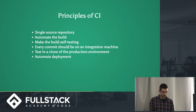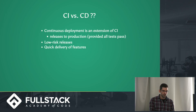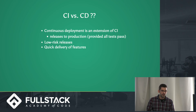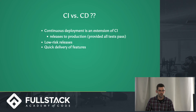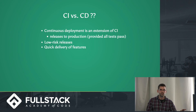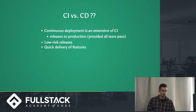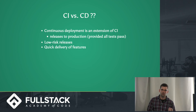CI versus CD: CD is continuous deployment. Continuous deployment is essentially an extension of continuous integration — once features are integrated, we need to deploy them to production and give customers what they want. Continuous deployment follows the same thought process of low-risk releases and quick delivery of features.